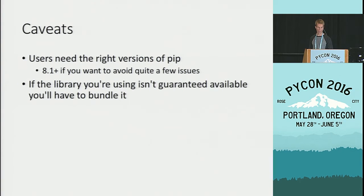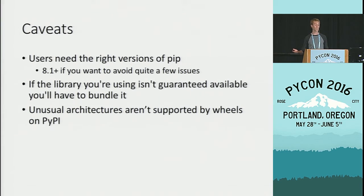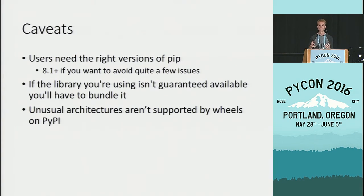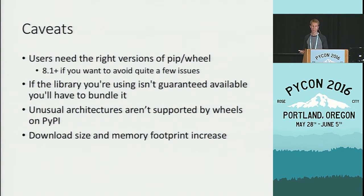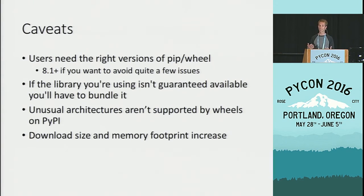Unusual architectures are not supported by wheels on PyPI, so your MIPS router and OpenPOWER systems will still have to compile themselves. So even with all these wheels, you're still going to have users that need the full build process — so make sure it stays as good as it can be. There's also a potential download size and memory footprint increase risk, particularly in large systems with many dependencies, though it's unclear if this will be significant outside of truly gigantic edifices like SciPy.